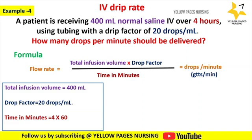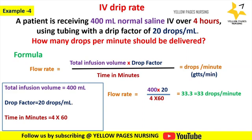Here, total infusion volume is 400 ml, drop factor is 20 drops per ml, and time in minutes will be 4 multiplied by 60. Applying the formula, we get: 400 multiplied by 20, divided by 4 multiplied by 60, which gives 33.3 — that is 33 drops per minute.